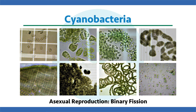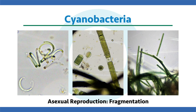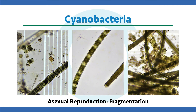Another way some cyanobacteria reproduce is called baocyte formation. This is fairly rare, but basically they still split — they just stay inside the parent cell wall until all the little copies come out. Another common form is fragmentation: filamentous cyanobacteria produce little hormogonia filaments that can slide and move around and go form new large filaments — these tiny mobile filaments are another form of asexual reproduction in cyanobacteria.